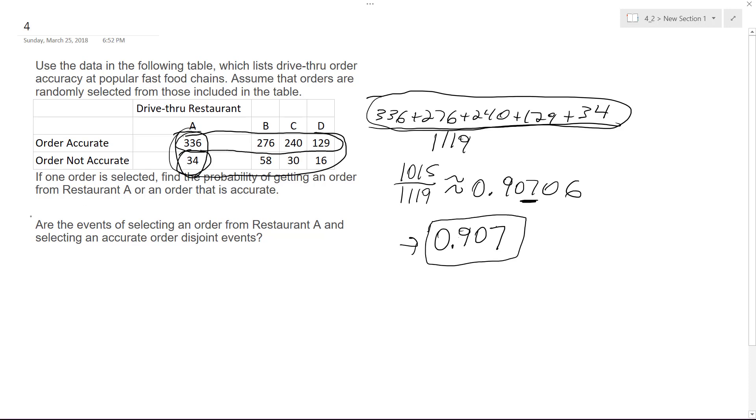Okay, so finally, the second portion right here: are the events of selecting an order from restaurant A and selecting an accurate order disjoint events?